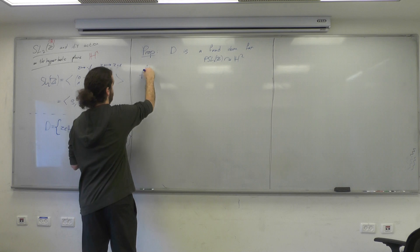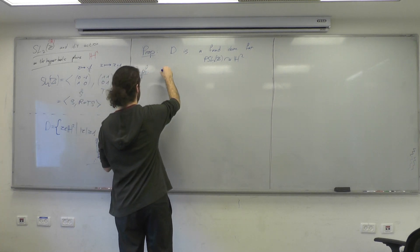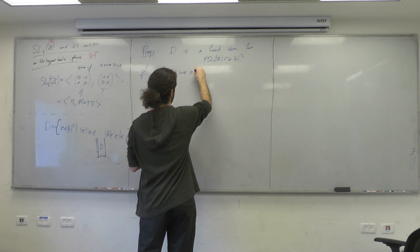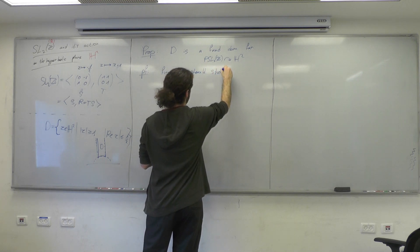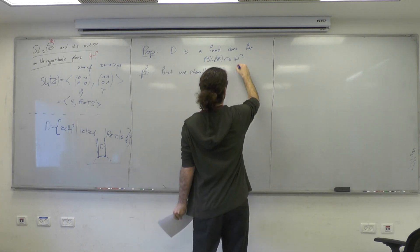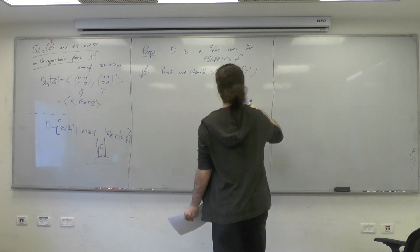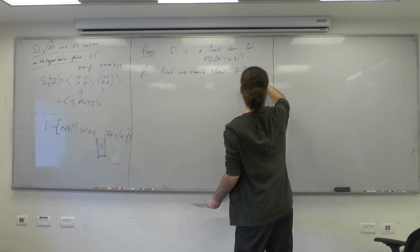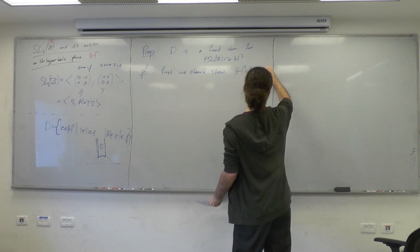Let's recall what we need to prove. We need to prove first that the upper half plane is the union — where G is in PSL2Z — of GD. Basically, it covers the plane by its translations.